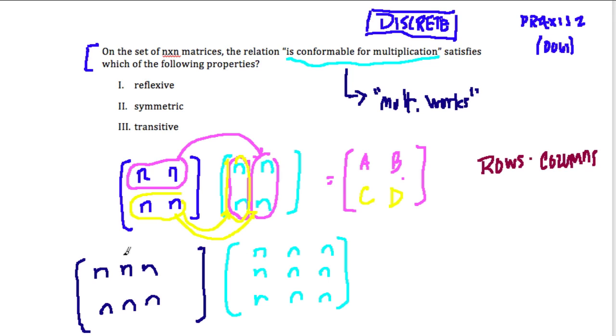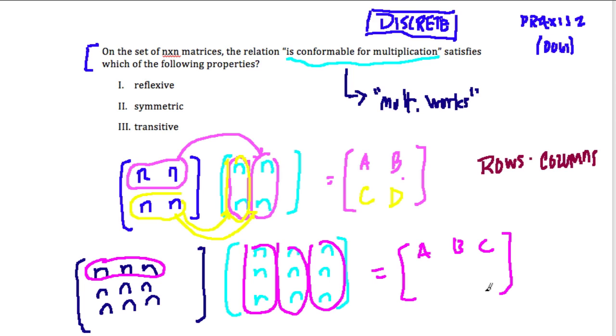Same thing here, just on a little bit larger of a scale. It's an n by n matrix. So I take this row and I multiply it by this column, that will give me the first value A in our matrix. And then we keep going. This row by this column, and then this column, we get B and C. And this just keeps going.